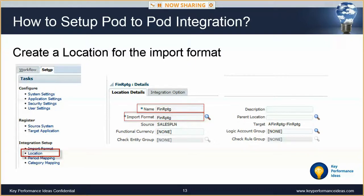In this next step, we are going to create a Location. Navigate to this using the Setup menu on the left. Click Add once you're in the Location screen, give your location a name, then select the import format we just created in the previous step. Click Save and we're ready for the next step.